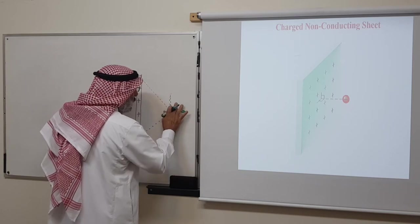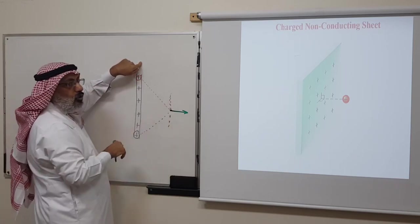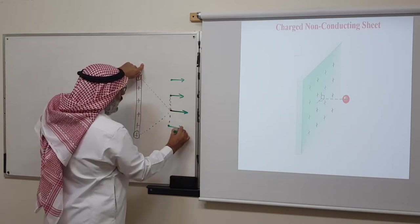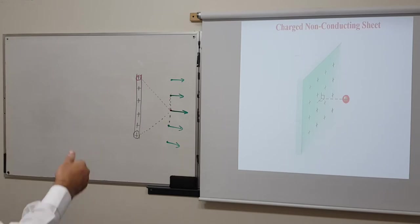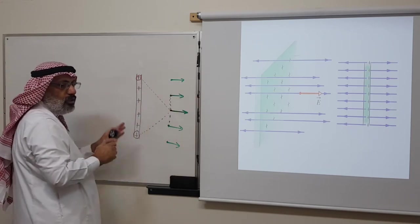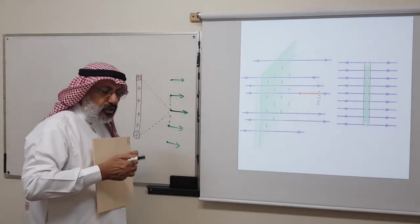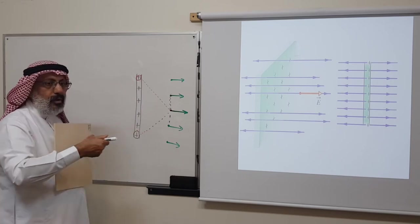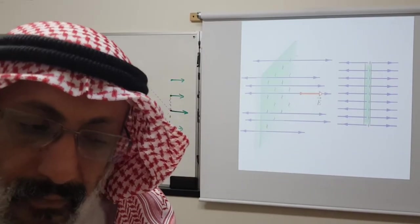The result is that electric field lines associated with a charged non-conducting infinite sheet are parallel to each other and perpendicular to the sheet. If the sheet is positively charged, the lines point away from the sheet on both sides. If the sheet is negatively charged, the lines still have this same perpendicular shape but point inward toward the sheet. That is how we determine the electric field direction due to an infinite non-conducting sheet.